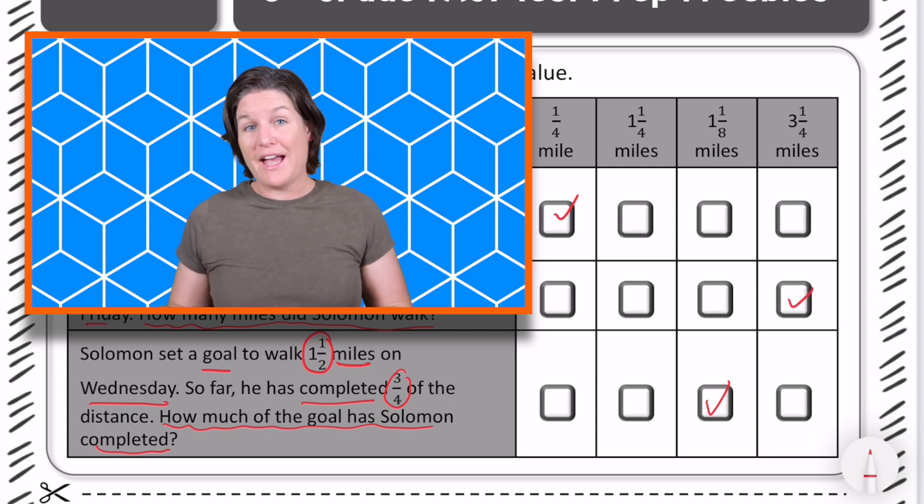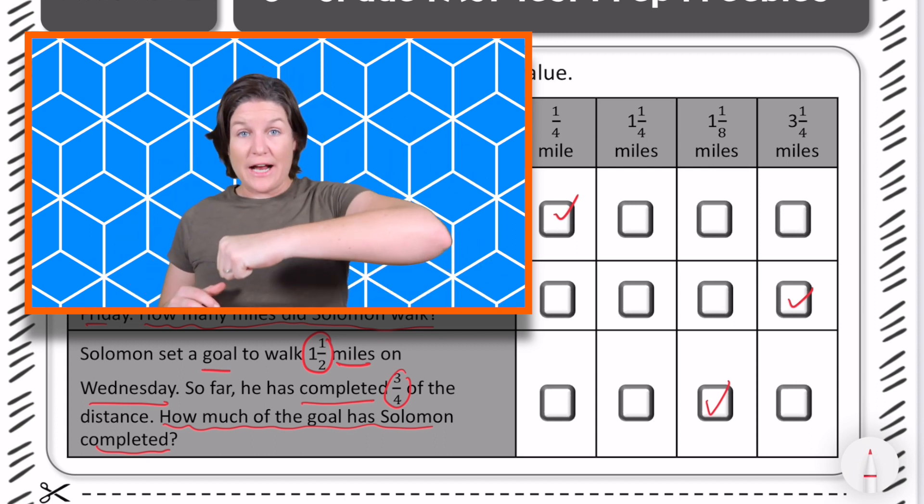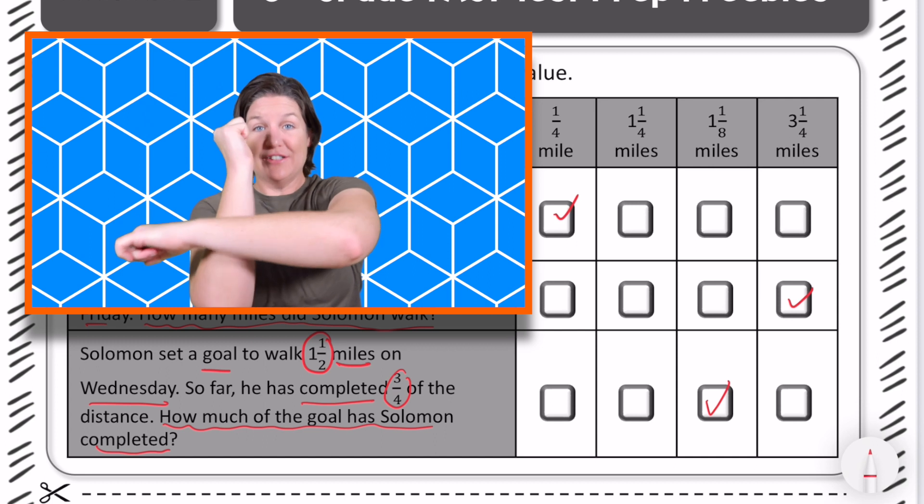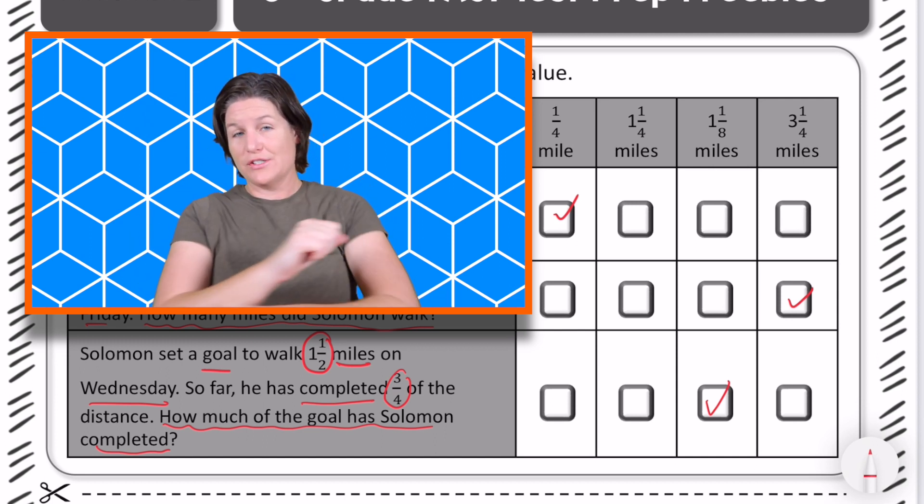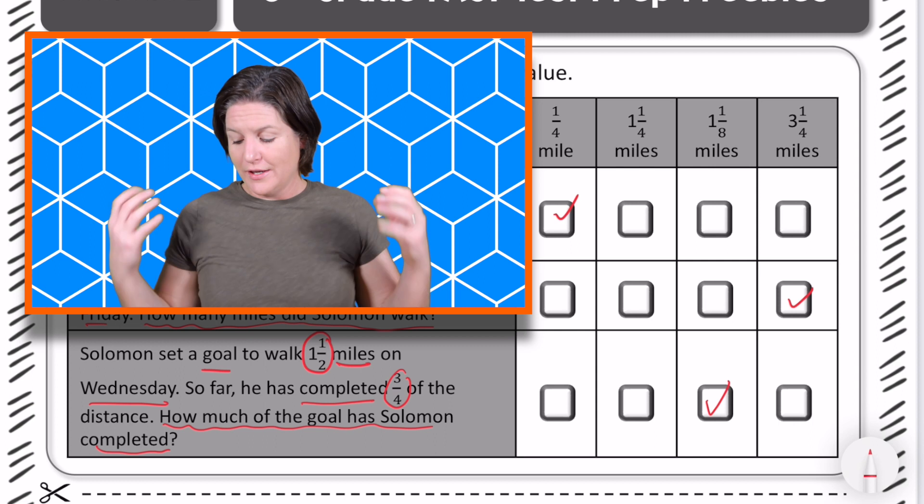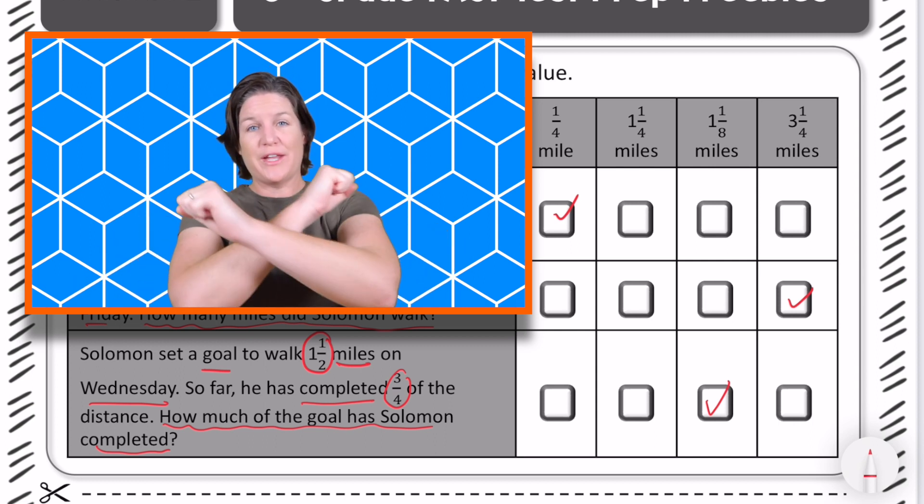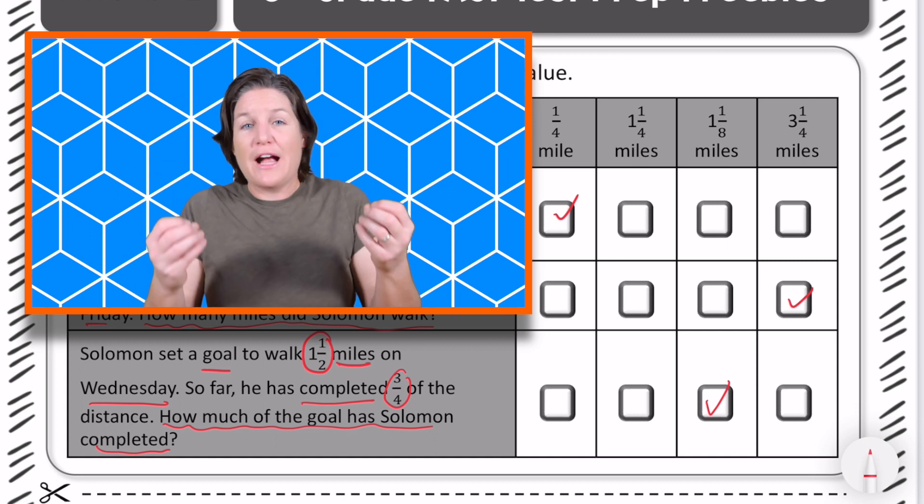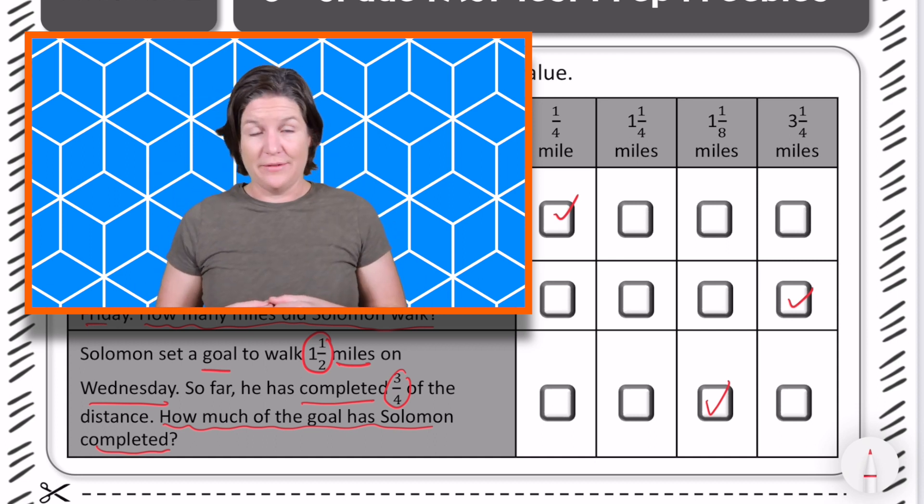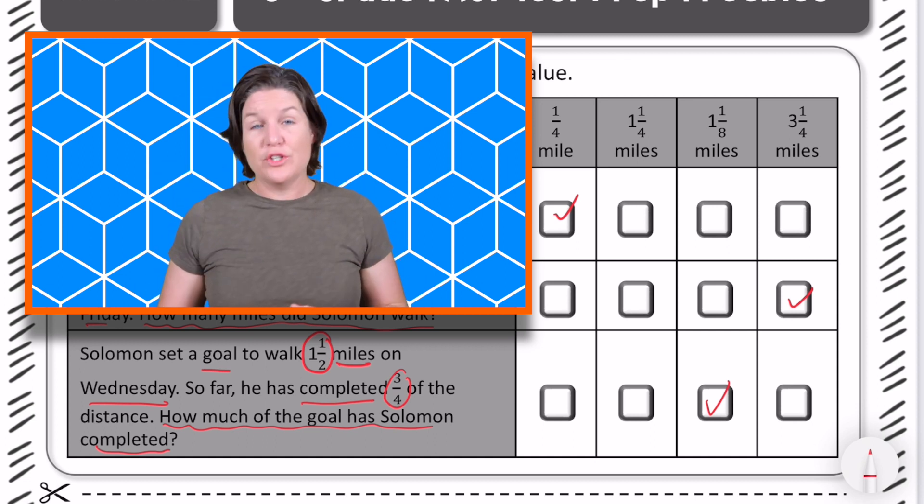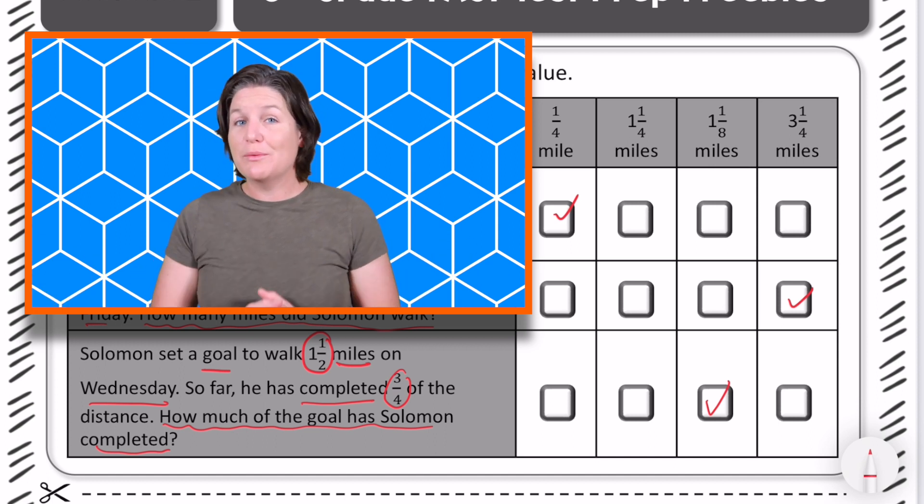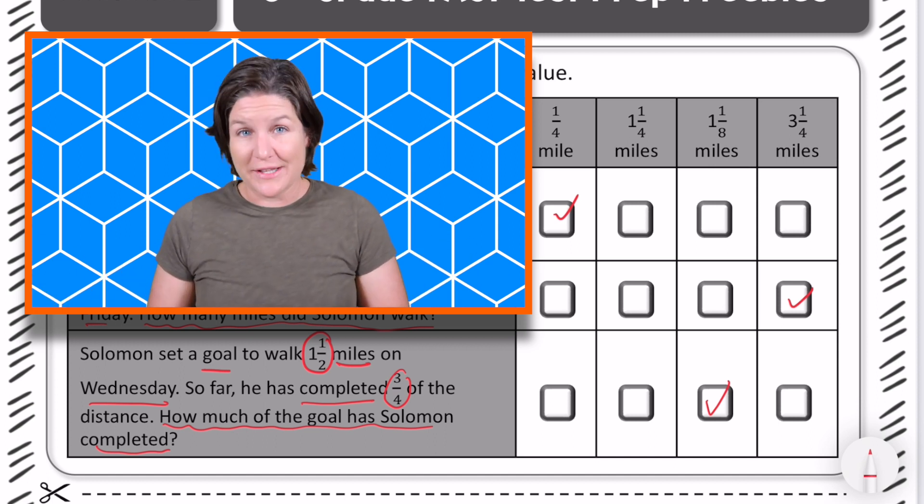So you can see for this problem, we actually had subtraction and then addition of fractions and multiplication of fractions. So it was really important to understand one of the ways that I look at it for multiplication is looking for that word of, because we're finding a fraction of something which shows multiplication. Make sure that you can always go back and rewind if you need to. And then when you're ready, let's close out this video lesson.